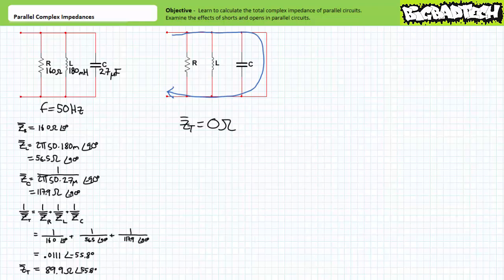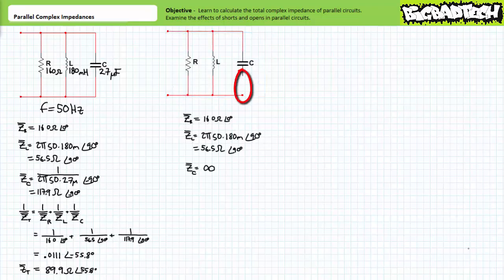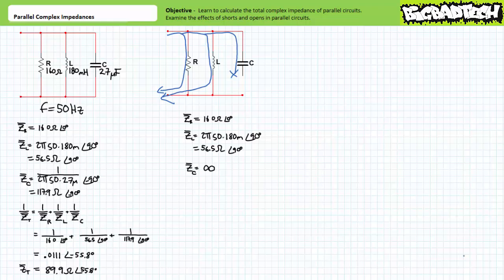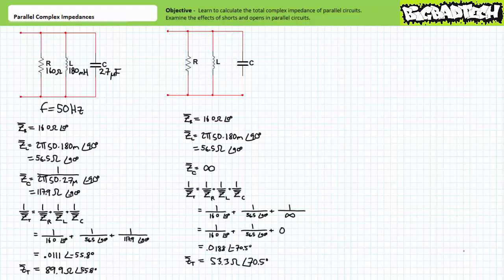Now let's examine the influence of opens in parallel circuits. Opens in parallel circuits necessitate a bit more examination because where the open occurs can dramatically alter the behavior of the total parallel arrangement. Consider an open in the form of a broken wire on the terminals of the capacitor. This effectively removes the capacitor from consideration, given current entering the top node wouldn't travel through the capacitor. As such, this parallel relationship is now only composed of the remaining resistor and inductor. When combined in parallel, the total impedance value is 53.3 ohms at an angle of 70.5 degrees.